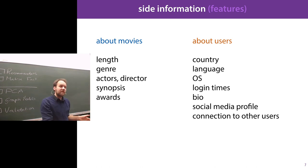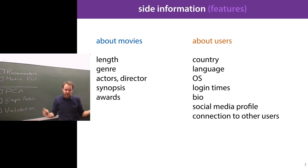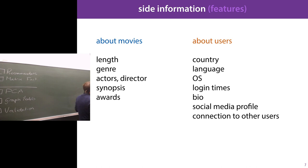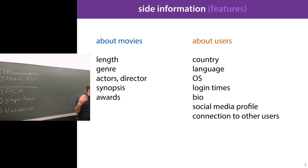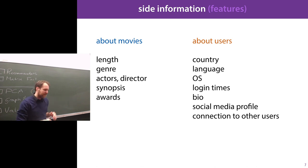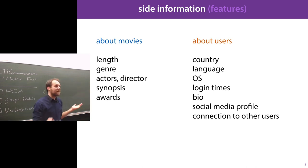For example, if you know from explicit feedback that somebody likes one Steven Spielberg movie and you know that another movie they haven't rated is also directed by Steven Spielberg, you can in principle conclude that they might like that movie as well. Or if two users are from the Netherlands and one likes a Dutch movie, then the other person might like it too. You can use this side information to infer similarities between movies and users, and use that to cluster your data and enrich the explicit feedback. So those are the three forms of data: explicit feedback, implicit feedback, and side information.